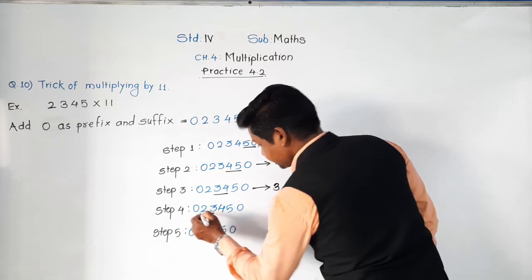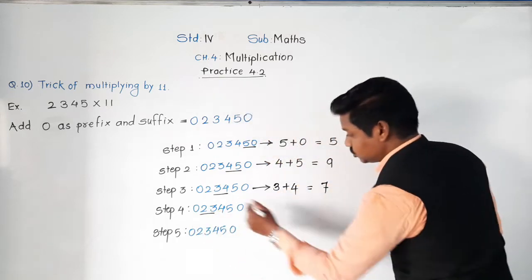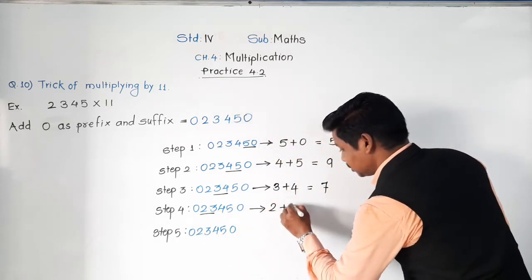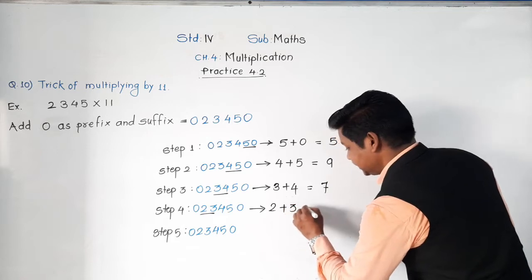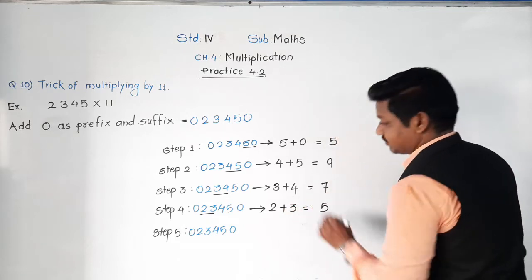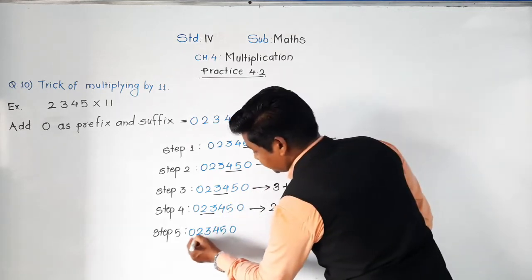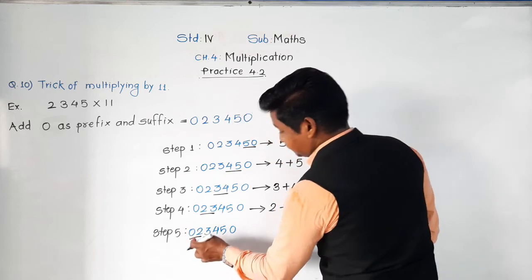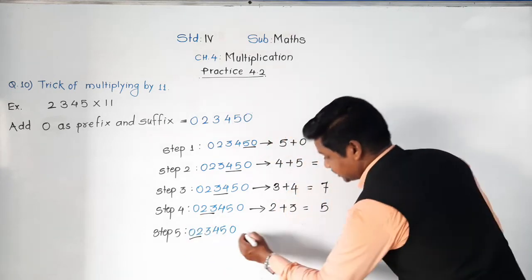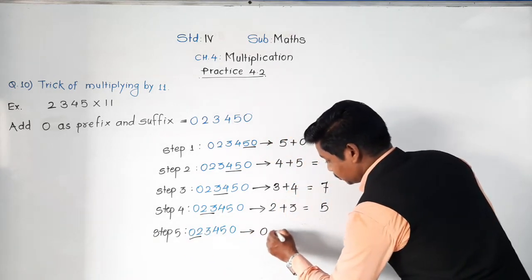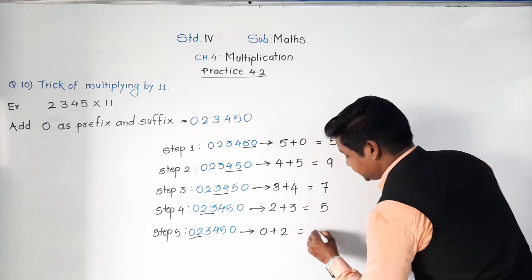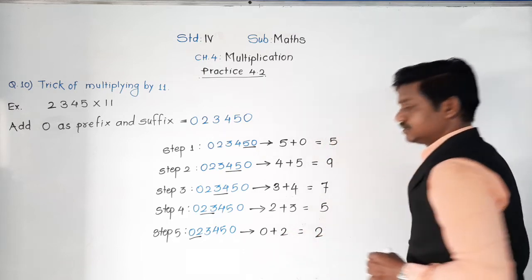Next, the fourth and fifth digits: 2 plus 3 equals five. Then underline the fifth and sixth digits, which are 0 and 2. Zero plus two equals two.